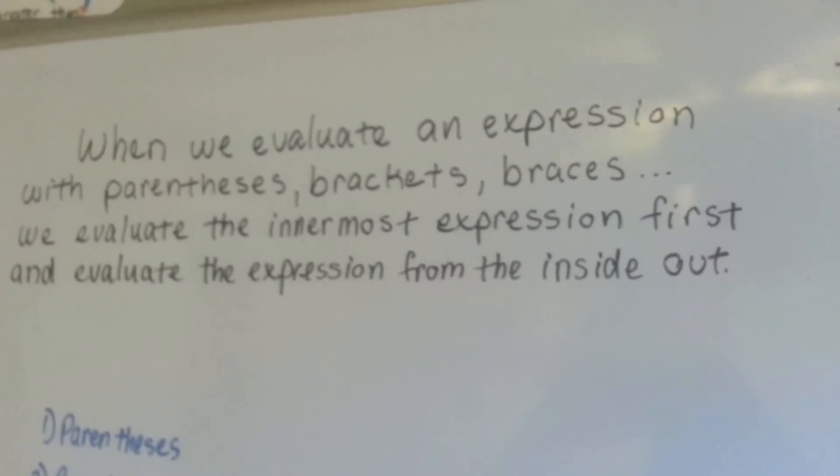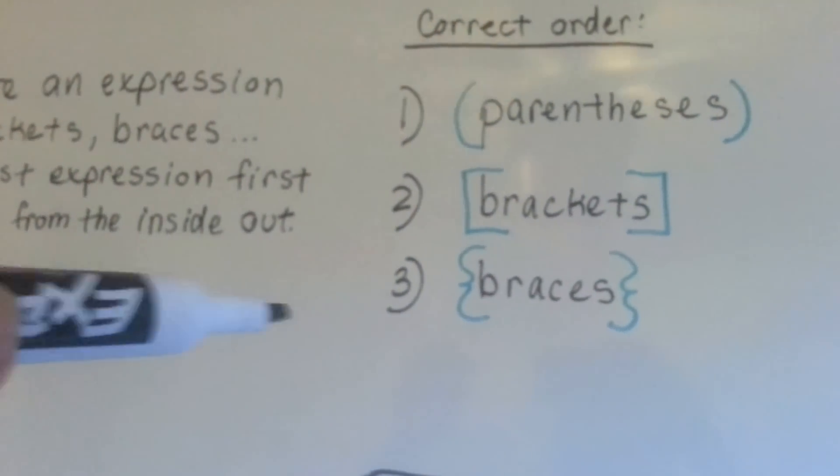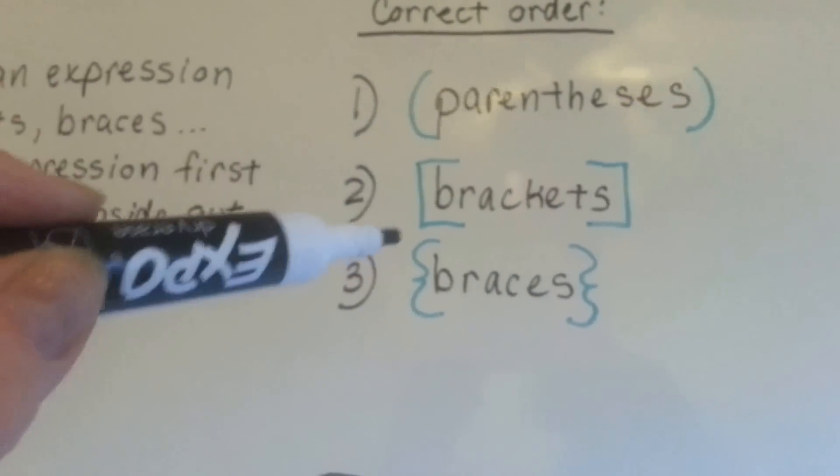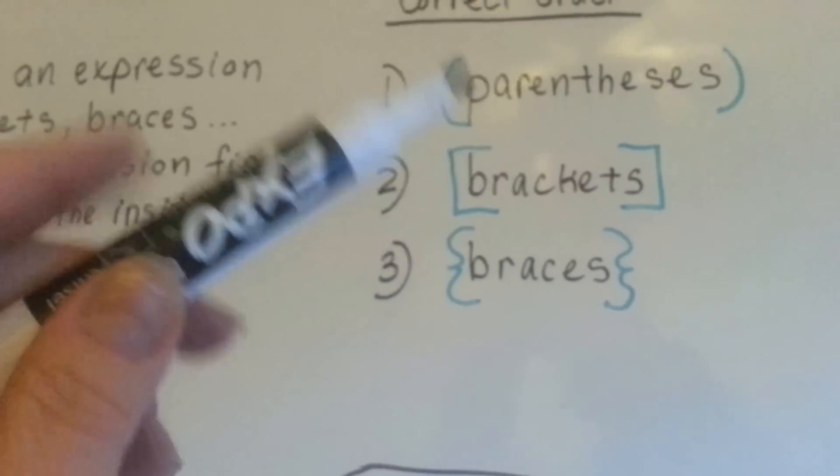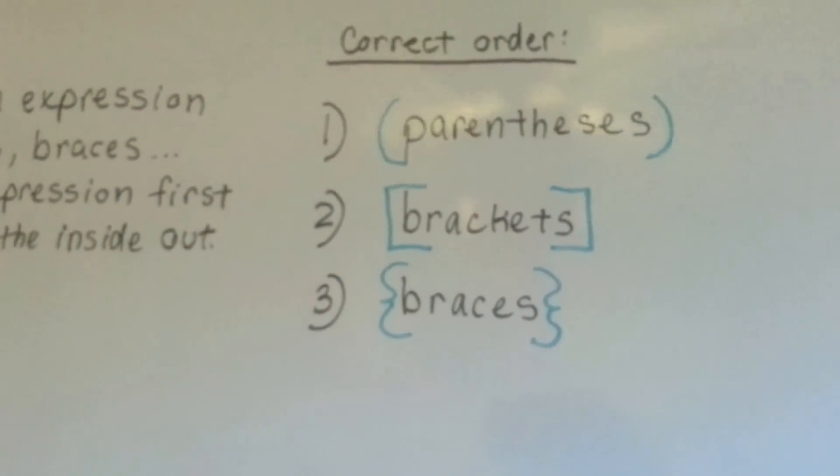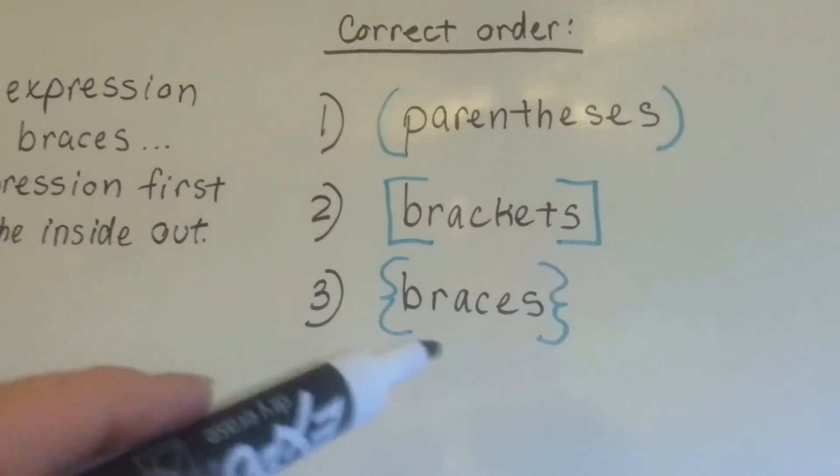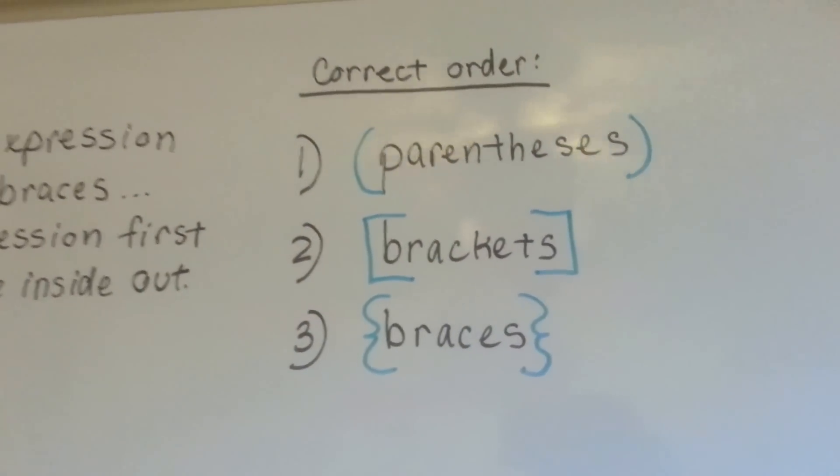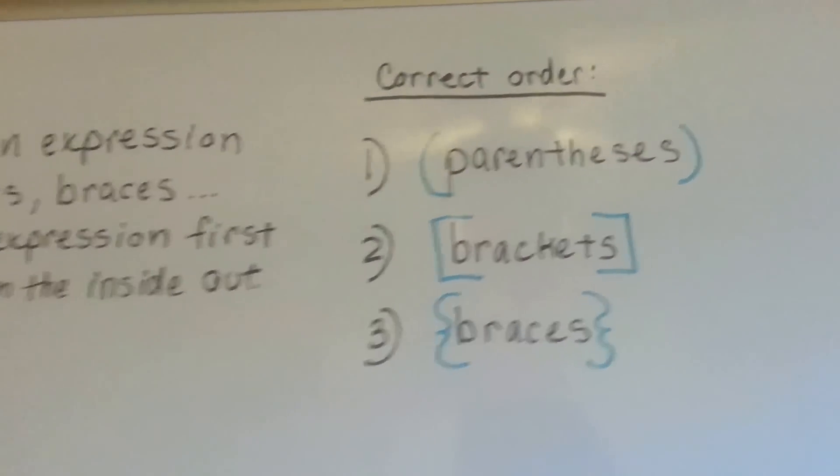So we start with the inside and slowly work our way out. This is what they look like. Parentheses are curved like that. Brackets are like box edges, like someone cut a box open and split it apart. And then braces are these funny little shaped things that have the little point in the middle. So we would do parentheses first, then brackets, and then what's inside the braces.